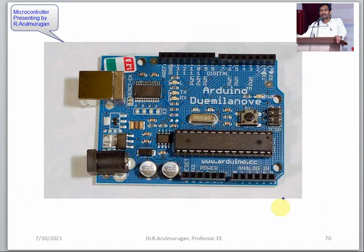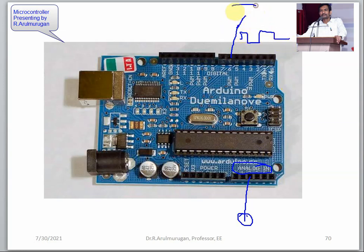For inputs, sensors are connected to the analog input pins — temperature sensors or object-sensing sensors. The output is PWM (Pulse Width Modulation). This PWM signal is given to a relay. The relay has a separate power supply, and based on the command from the controller, the relay turns on or off.